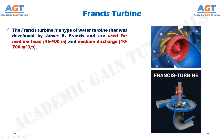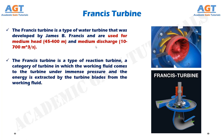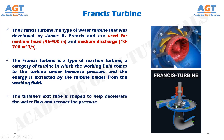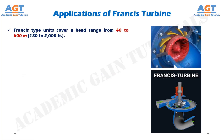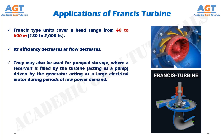The Francis turbine is a type of water turbine that was developed by James B. Francis and is used for medium head and medium discharge, up to 700 cubic meters per second. The Francis turbine is a type of reaction turbine in which the working fluid comes to the turbine under immense pressure and the energy is extracted by the turbine blades from the working fluid. The turbine's exit tube is shaped to help decelerate the water flow and recover the pressure. Water flow is radial from exterior to interior. Francis type units cover a head range from 40 to 600 meters. Its efficiency decreases as flow decreases. They may also be used for pump storage, where a reservoir is filled by the turbine acting as a pump, driven by the generator acting as a large electrical motor during periods of low power demand.